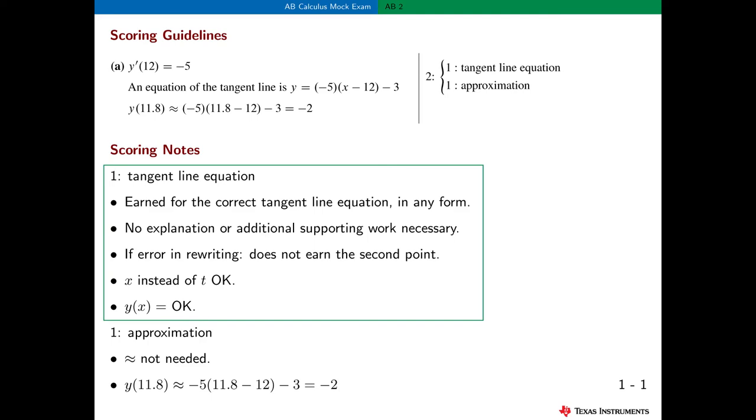However, if the student makes an error in rewriting their tangent line equation, that is, putting it in a different form, then they do not earn the second point. And it's okay if the student uses x as the independent variable, not t as in the table. And even if the student writes y(x) equals their correct tangent line equation, we'll still award the tangent line equation point.